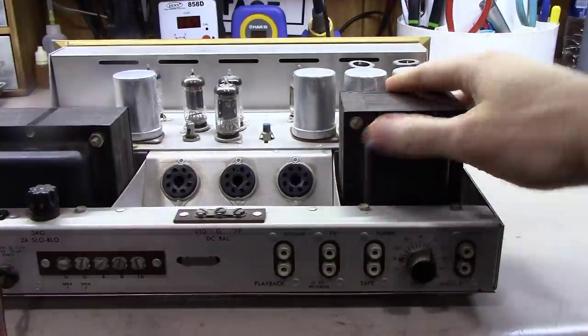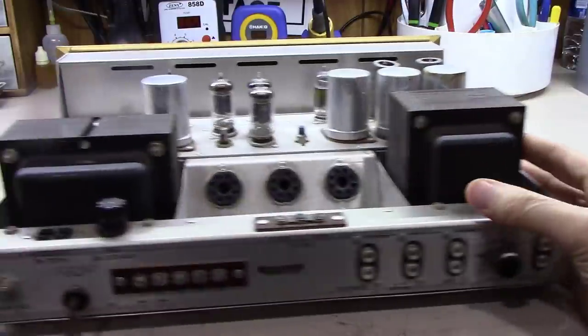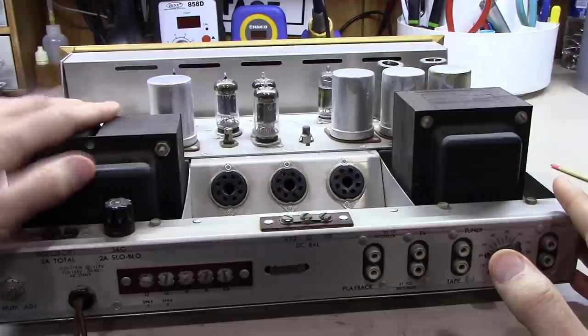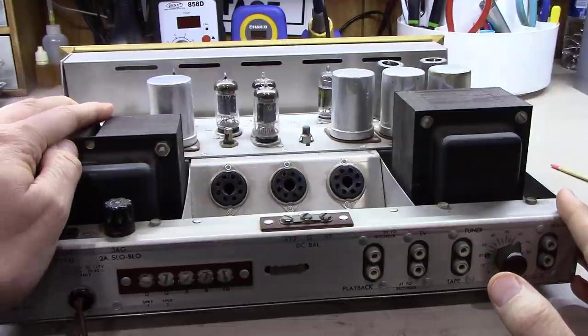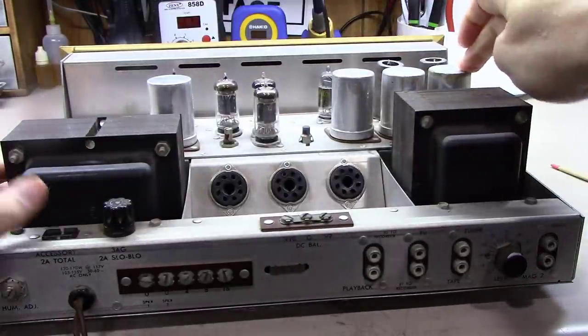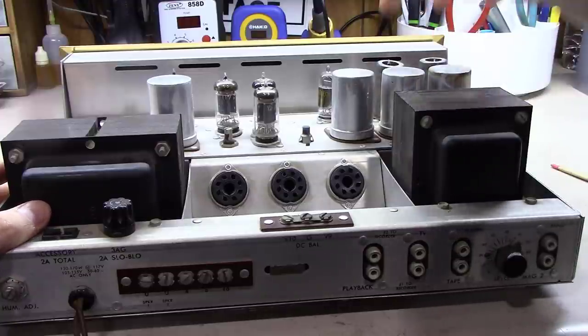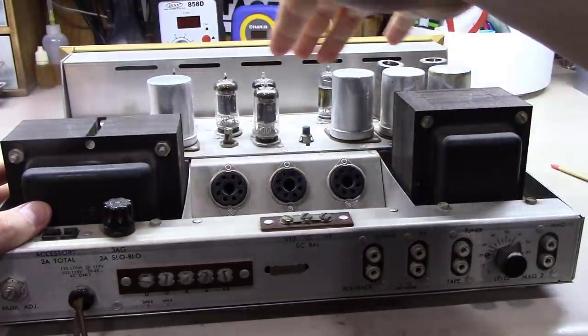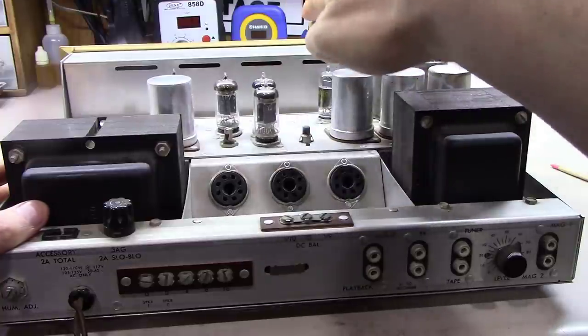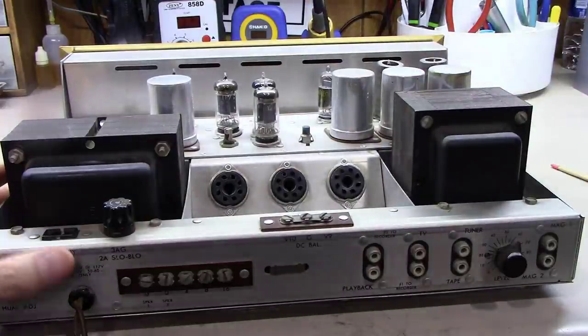We've got what appears to be output transformer right here. We've got our hefty power transformer here. And then looks like we've got one, two, three, four can caps here. We've got some 12AU7 and 12AX7s on this unit and a 6AV6 here. So that's kind of the tube compliment.